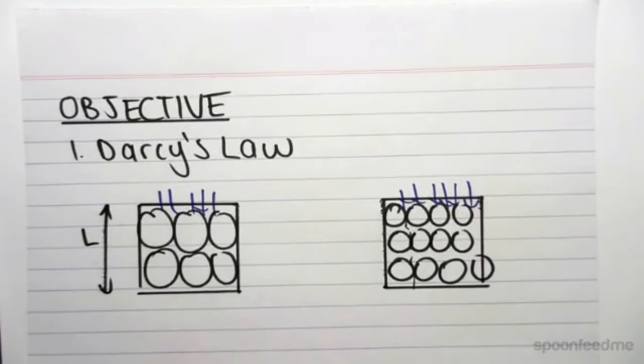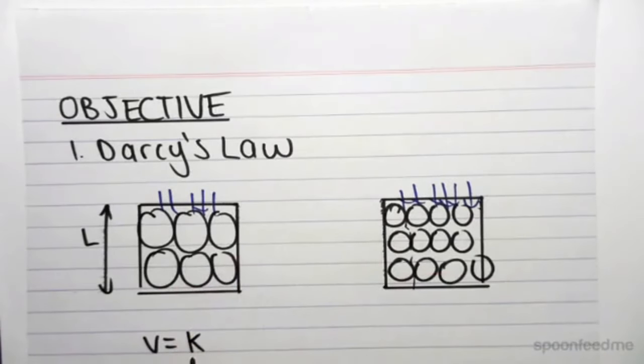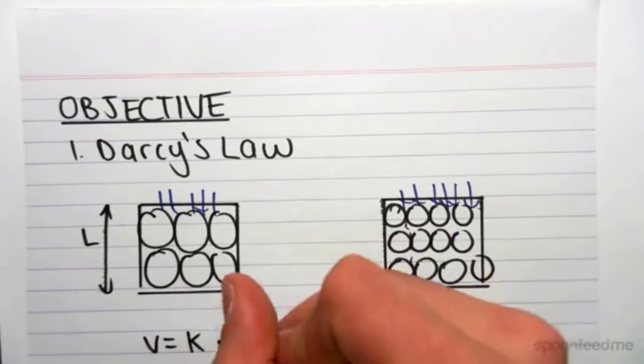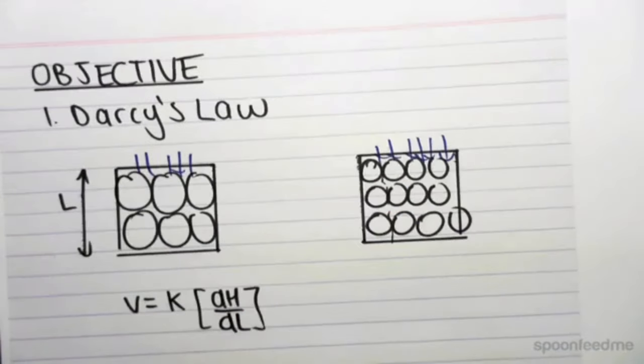We can say that the velocity is equal to K, which is a proportionality constant that we're going to define in a second, which takes into consideration the different soil samples based on their particle sizes, as well as the change in head divided by the change in length.